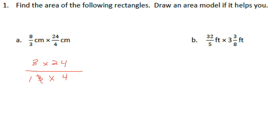I can take 1 — 3 will go into 3 one time, and 3 will go into 24 eight times. Then 4 will go into 4 one time, and 4 will go into 8 two times. That leaves me with 8 times 2, which gives me 16 over 1, which equals 16 centimeters squared.